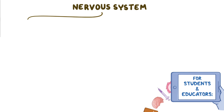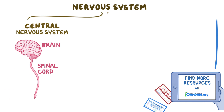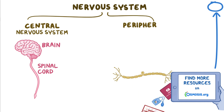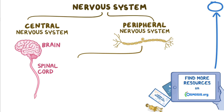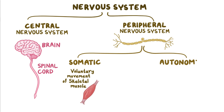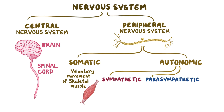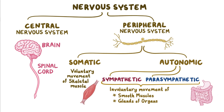The nervous system is divided into the central nervous system — the brain and the spinal cord — and the peripheral nervous system. The peripheral nervous system can be divided into the somatic nervous system, which controls voluntary movement of our skeletal muscles, and the autonomic nervous system, which is further divided into the sympathetic and parasympathetic nervous systems, and controls the involuntary movement of the smooth muscles and the glands of our organs.